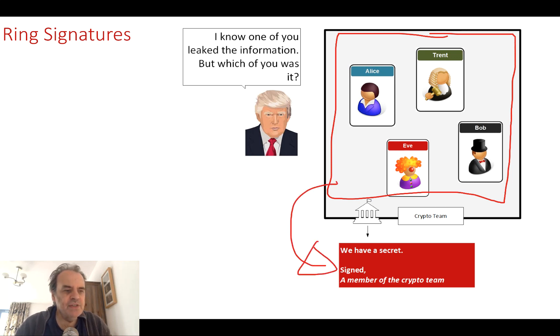The example that was given in the original paper is a leak of some sensitive information from the White House. In this case, the person within the White House could actually find out that something had been leaked, and the leak had came from one of the trusted entities, but it was not possible to actually determine which one it was.